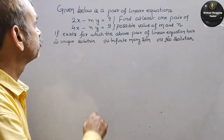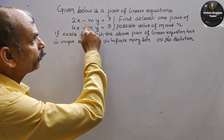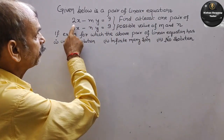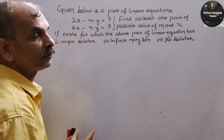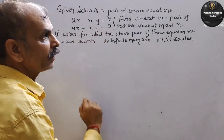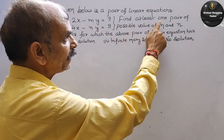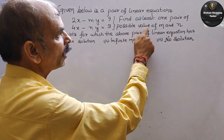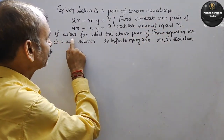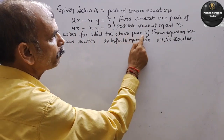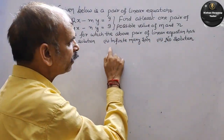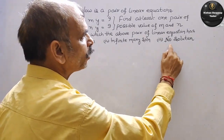A question is given: below is a pair of linear equations — 2x - my = 9 and 4x - ny = 9. Find at least one pair of possible values of m and n, if they exist, for which the above pair of linear equations has a unique solution, infinitely many solutions, and no solution.